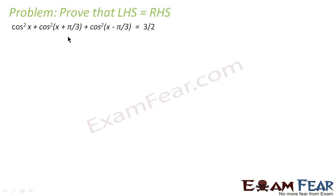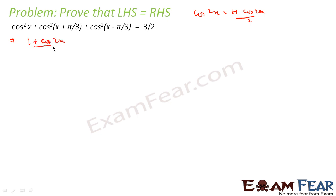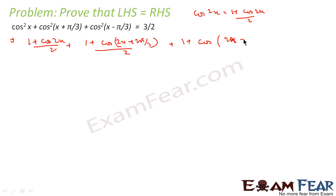In this question we have to prove that cos²x + cos²(x + π/3) + cos²(x − π/3) = 3/2. We know that cos²x = (1 + cos 2x)/2. We use this because we want to get rid of cos squared x. So we write this whole thing as (1 + cos 2x)/2 + (1 + cos(2x + 2π/3))/2 + (1 + cos(2x − 2π/3))/2.